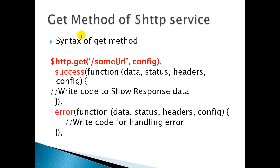So what is the syntax of the GET method? You can see here the syntax: HTTP.get is a method. After that, we have to pass the URL of your action which you have defined in your controller. After that, config — you have to define it — but it's not compulsory; config is optional. To keep this program simple, I'm not going to use config.